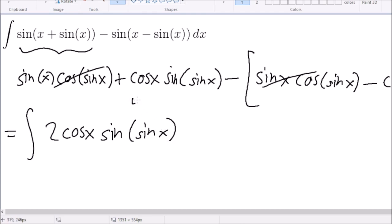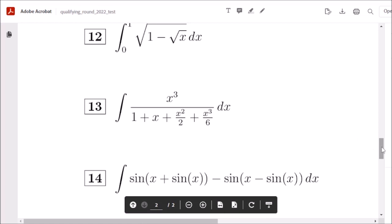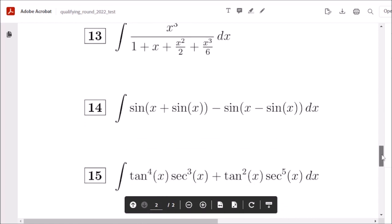And then if you let u equal sine of x, this becomes two, two sine of u. And then this becomes negative two cosine of u. And so the answer would just be the same. So, very cool cancellation.